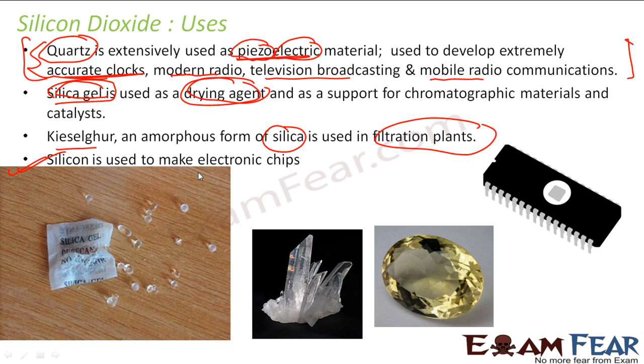The most critical use of silicon is to make electronic chips. Electronic chips are used in TV, mobile, fridge - anything you talk about. All the electronic items we have use electronic chips.